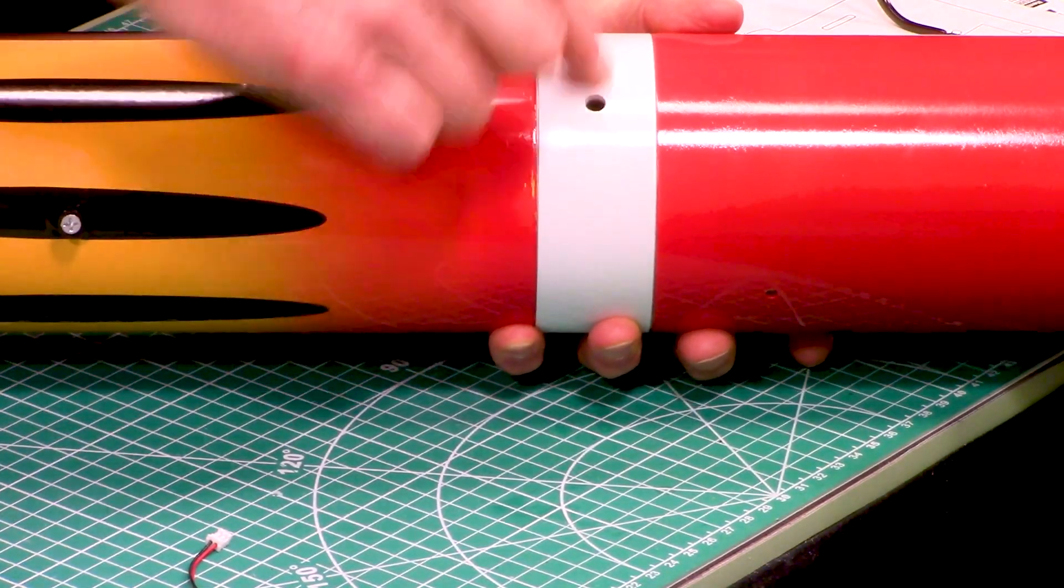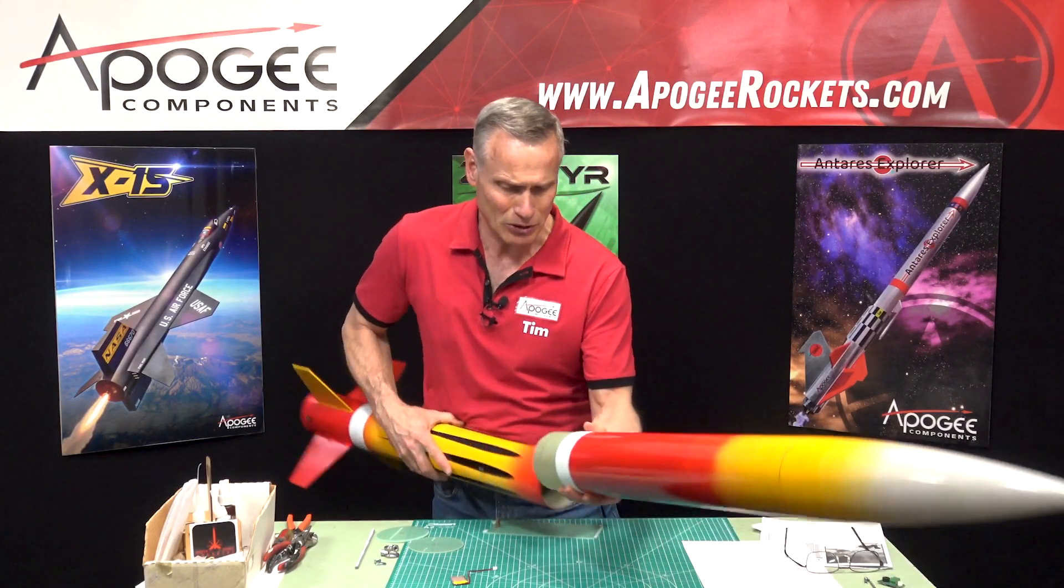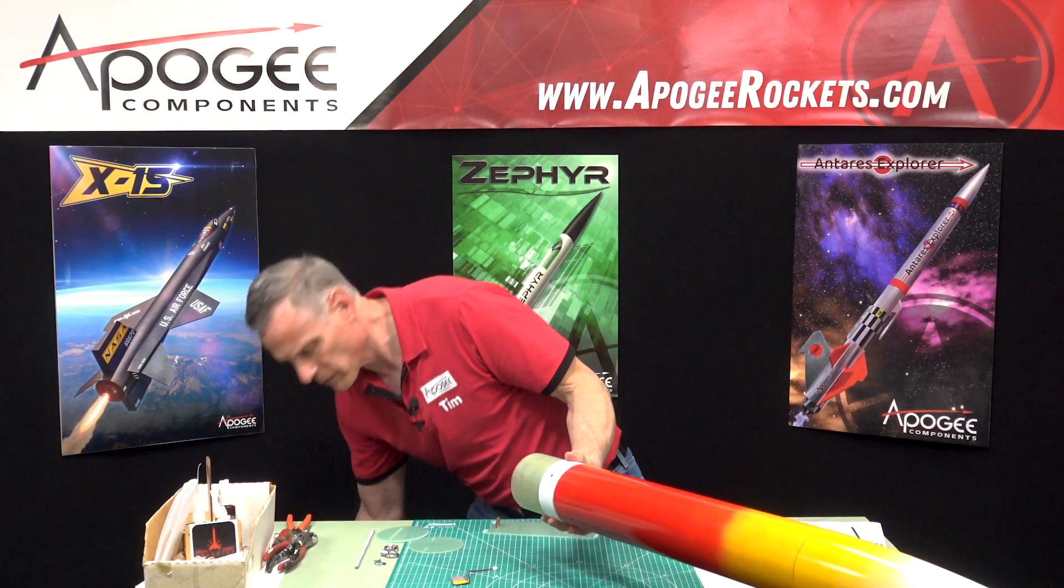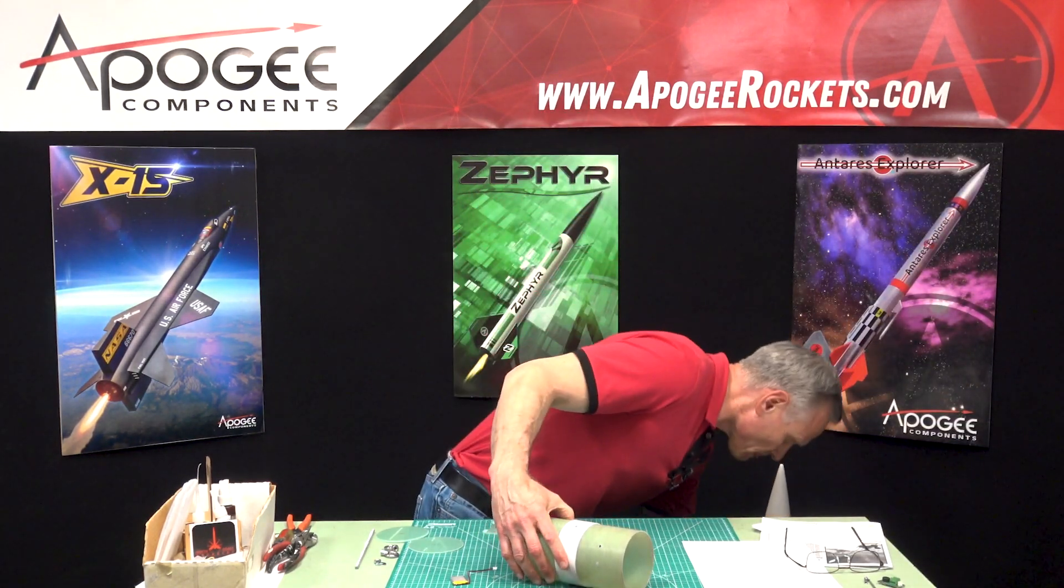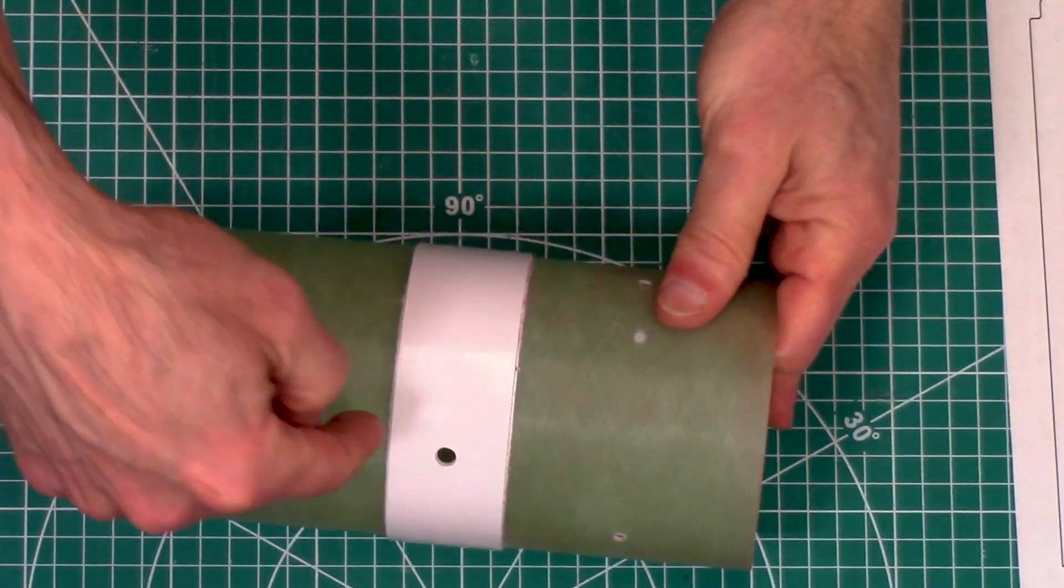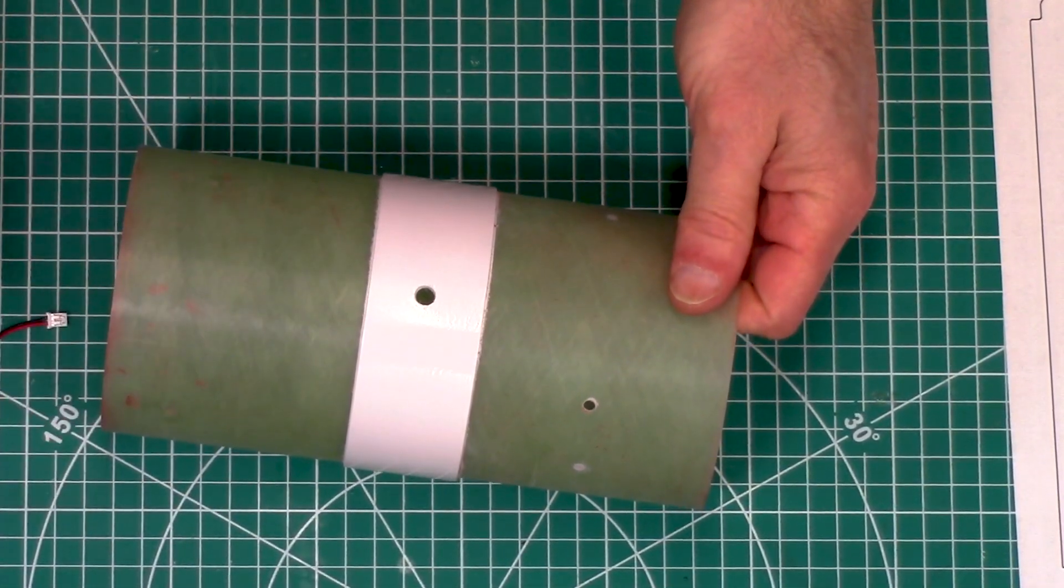This is in the switch band, so if I take this apart you can see that there's the coupler on the inside. I just drilled that hole for my on-off switch that will go in the eBay.